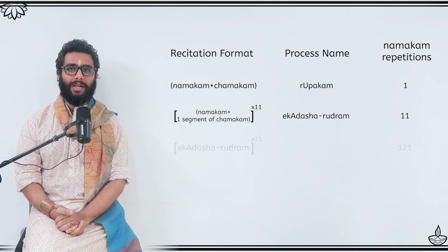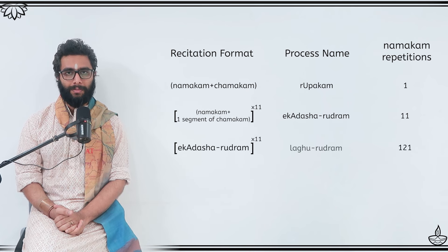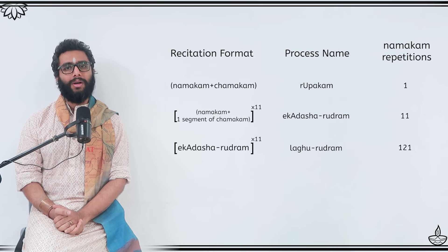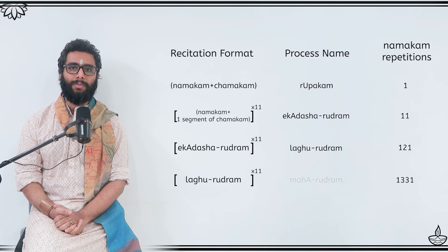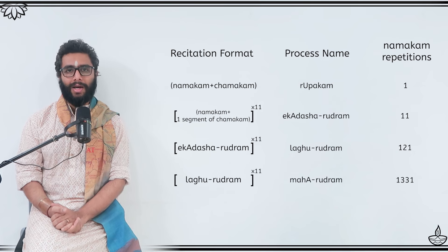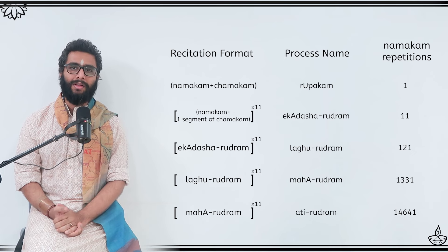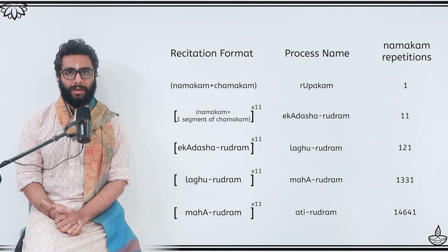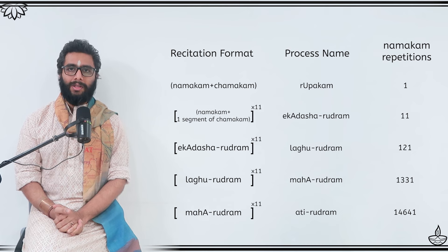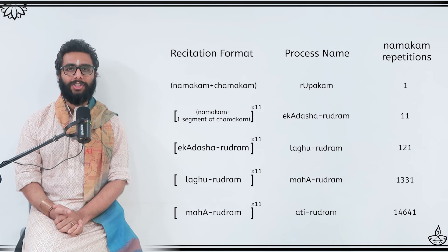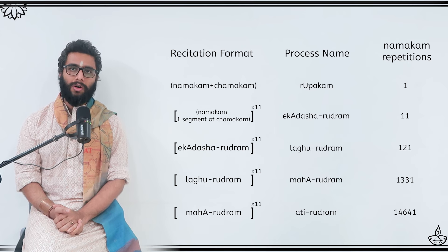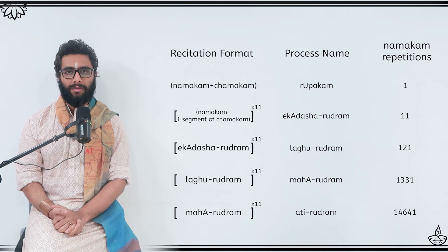Doing this entire process 11 times is called Laghurudhram, doing Laghurudhram 11 times is called Maharudhram, and doing that 11 times is called Atirudhram. Here is a table which depicts how many times Namakam is chanted in each of these formats. The mantras of both Namakam and Chamakam are performed both as a collective chant or as a homa, by adding the word svaha at the end of every mantra.